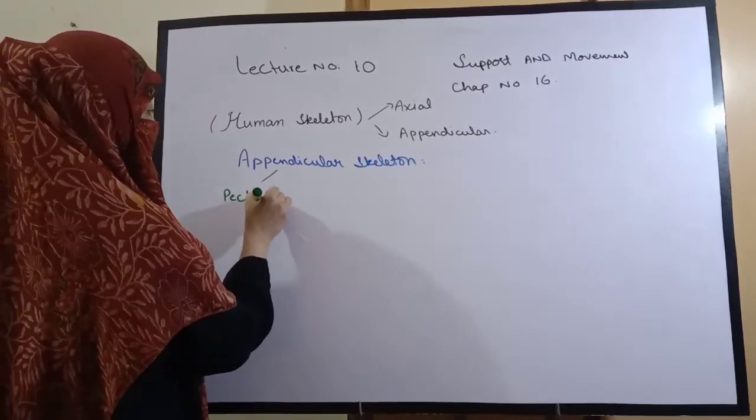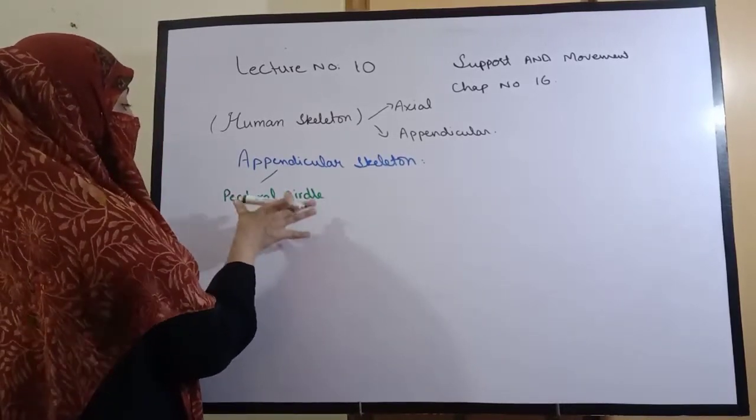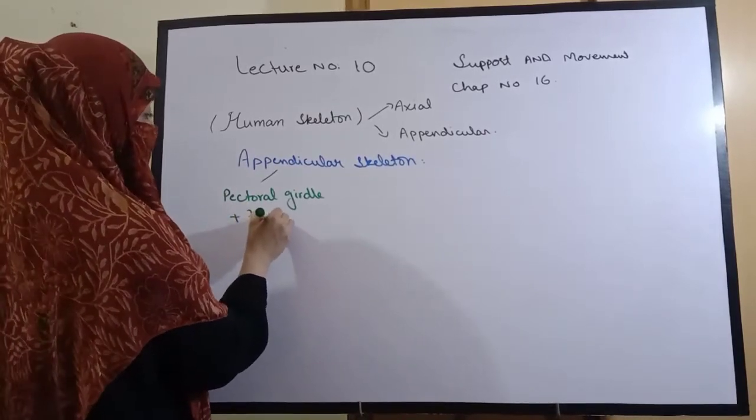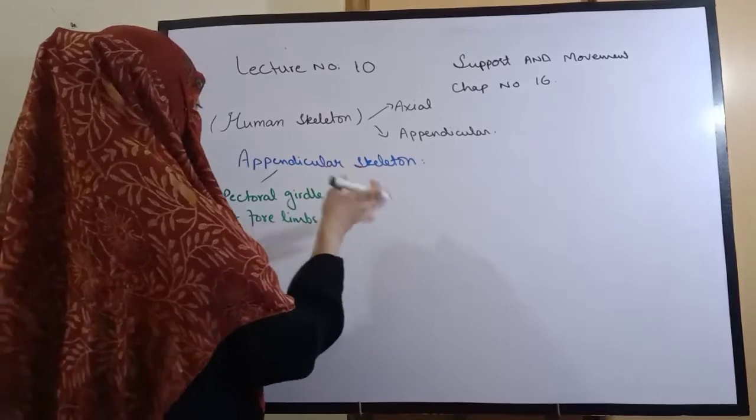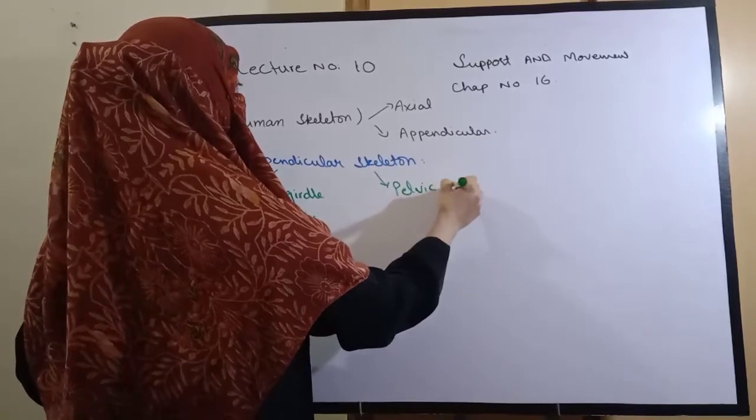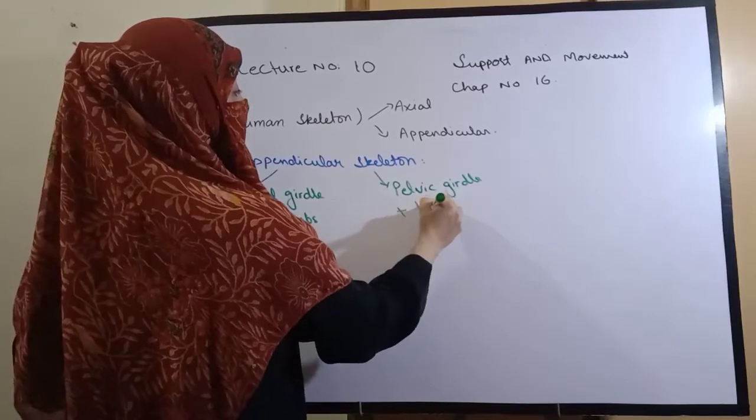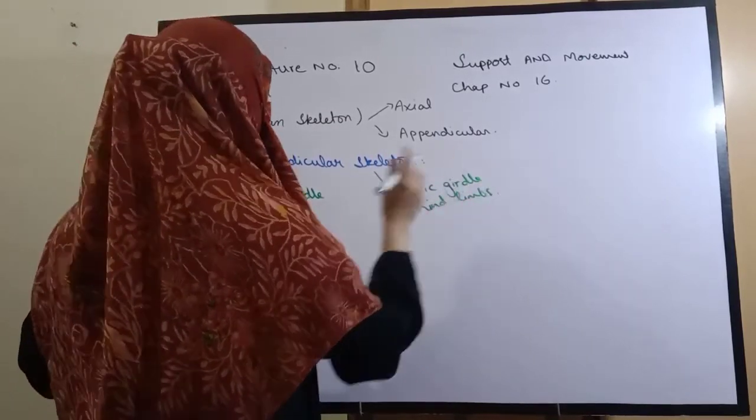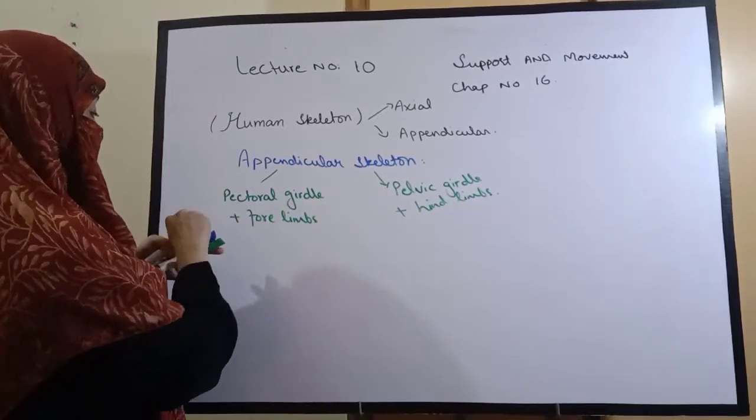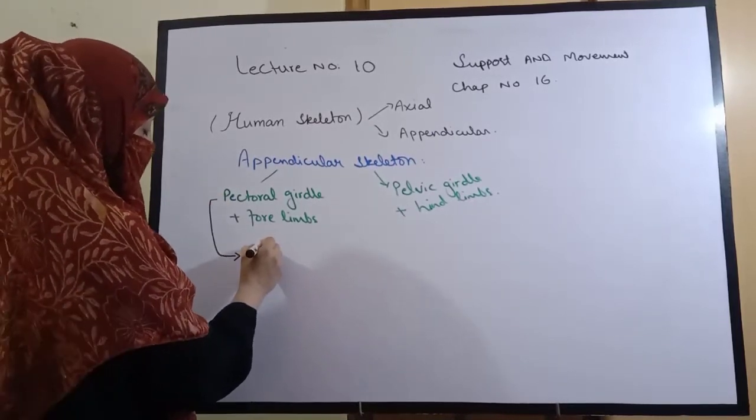Appendicular skeleton includes pectoral girdle, which is the shoulders portion, and four limbs - the arms and hands. After that is the pelvic girdle, which is the hip portion, and then the hind limbs. Today we will discuss the bones of these two portions. First, we start with the pectoral girdle.